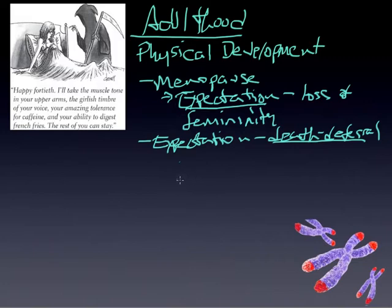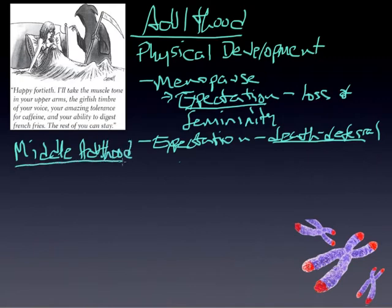The physical development aspect is part of it. If we're in middle adult or early adulthood, it's probably more like emerging adulthood—you don't really notice a lot of changes. But in middle adulthood, you begin to notice a little bit more of the changes that occur.